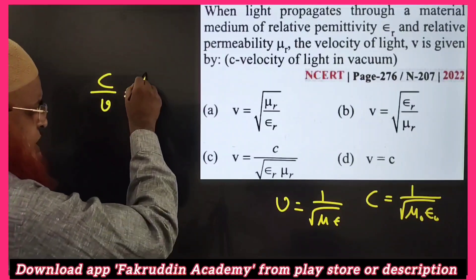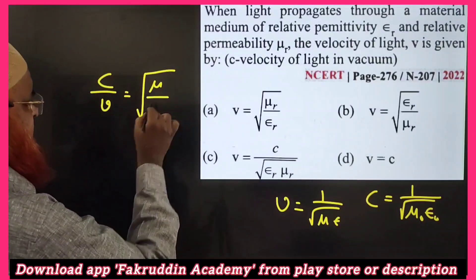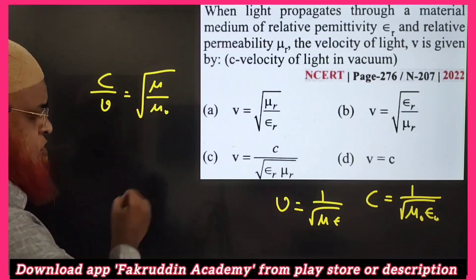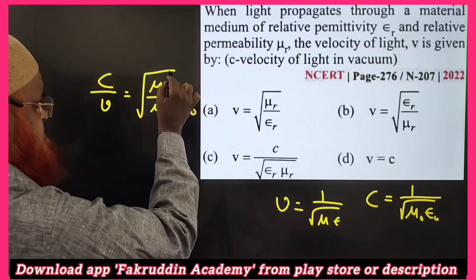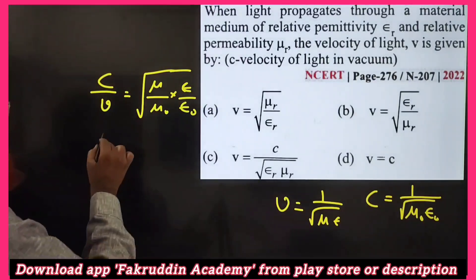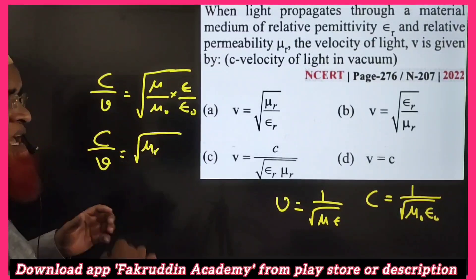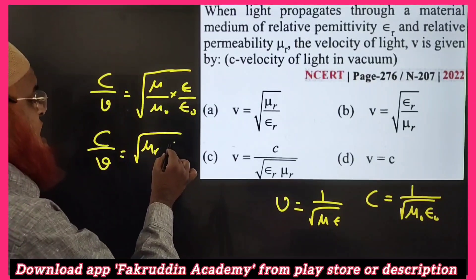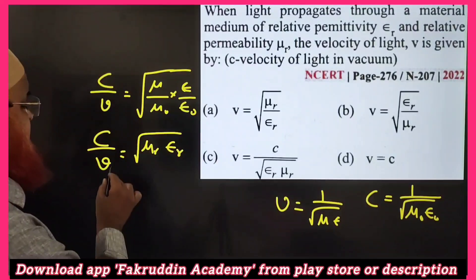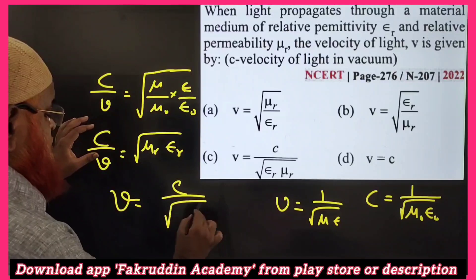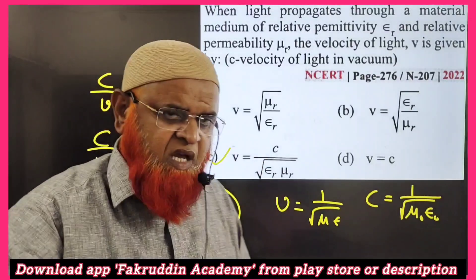We need to find v/c. So c/v = √(με / μ₀ε₀). Here μ/μ₀ is the relative permeability μᵣ, and ε/ε₀ is the relative permittivity εᵣ. Therefore v = c / √(μᵣ εᵣ). This is our solution, which is option C.